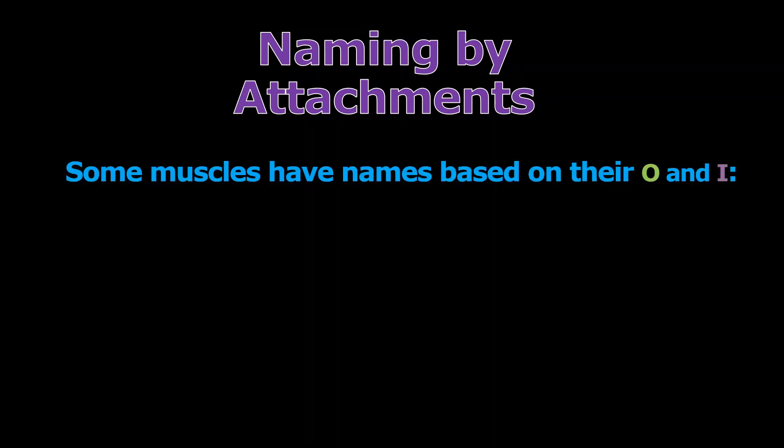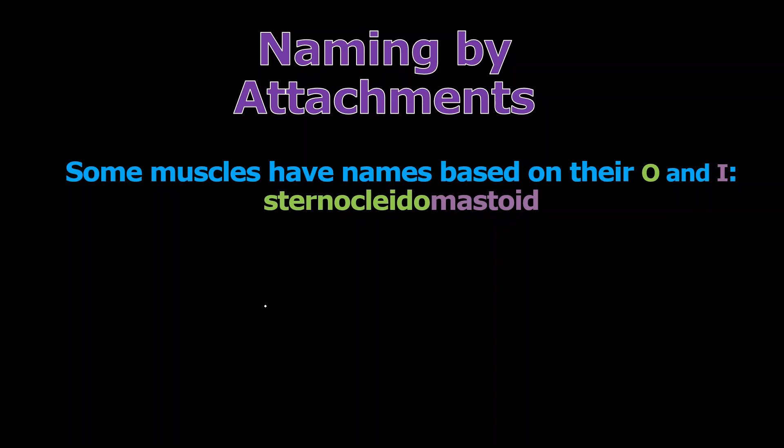If you know your bones well, something very simple to do is look at a muscle name, break it apart, and think about where it might attach to the skeleton. Some muscles have their names based on their origins and insertions, colored here in green and purple so they stand out. Take for example the sternocleidomastoid. If you've never heard it before, you may have no clue where it is or what it does — but if you know your attachments, you can start to picture what this muscle does and where it's located.